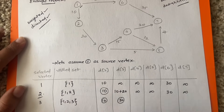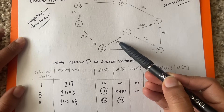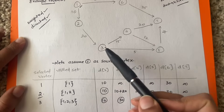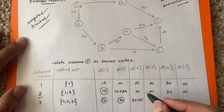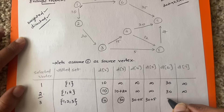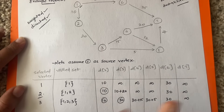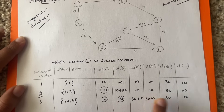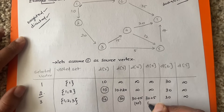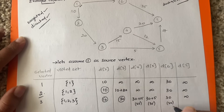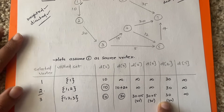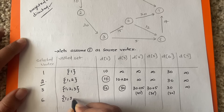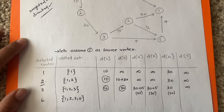From vertex 3, you have two options: you can go to vertex 4 or vertex 5. The cost to reach vertex 3 is 30 (now fixed, so it is circled). From 3 to 4 the cost is 15, so total D(4) = 30 + 15 = 45. From 3 to 5 the cost is 5, so total D(5) = 30 + 5 = 35. D(6) remains 30. Comparing unvisited costs: 45, 35, and 30 — the minimum is 30, so the next selected vertex is 6, and the visited set becomes {1, 2, 3, 6}.